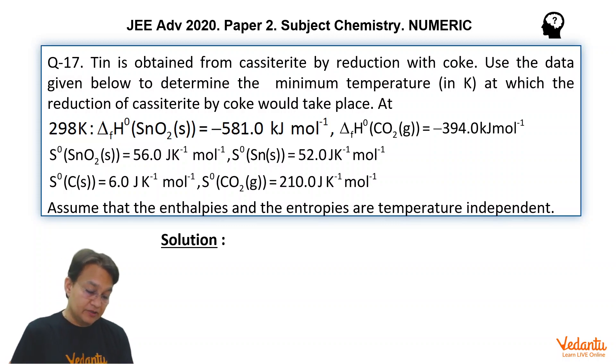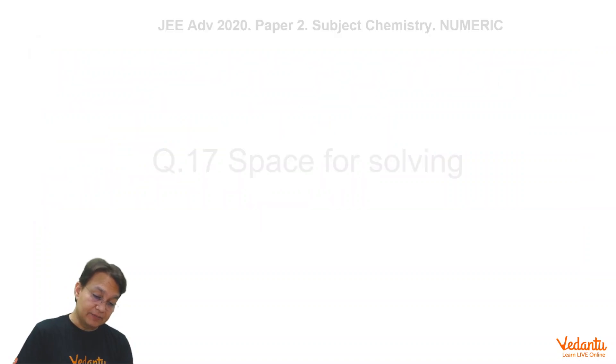If you go through this problem, tin is getting reduced by coke and some data is given. It has been asked at what temperature the reduction of cassiterite by coke would take place. The theory of this problem: you have to calculate the value of delta RH0 of the reaction and delta RS0 of the reaction.